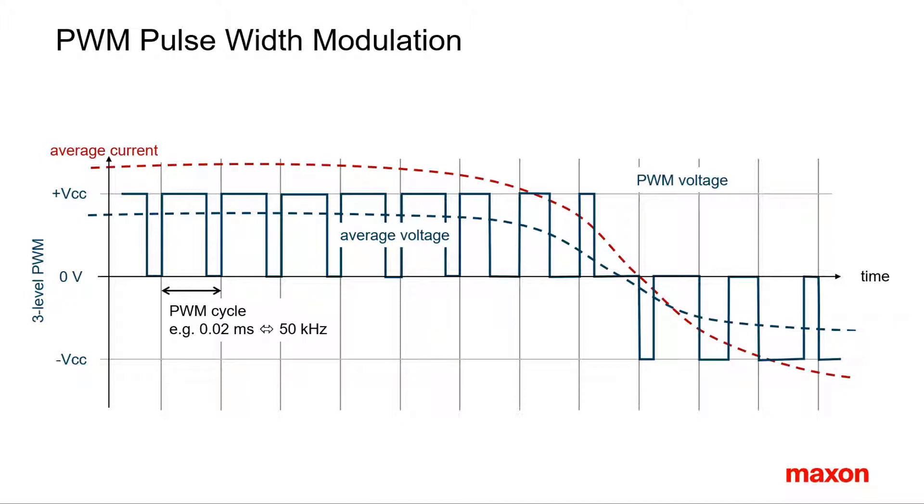The PWM frequency must be high enough for the supplied system just to see the average voltage. Optionally, the receiving system could do some input filtering.